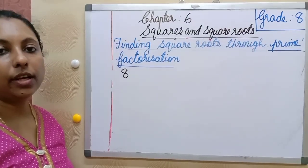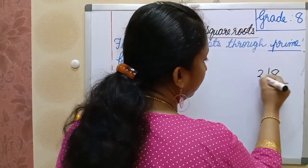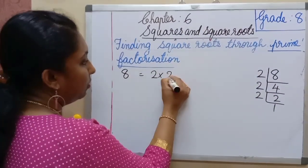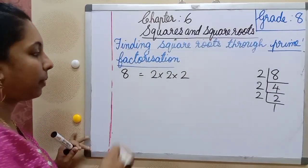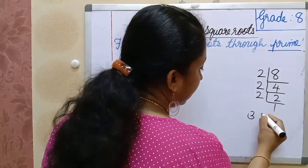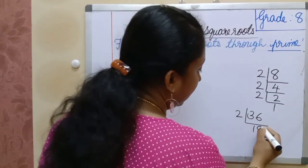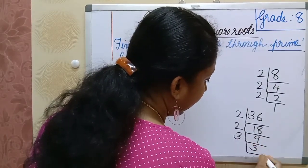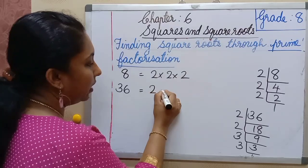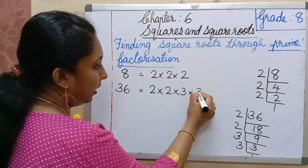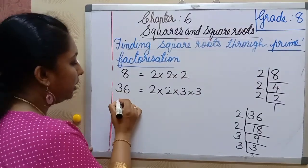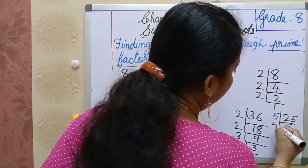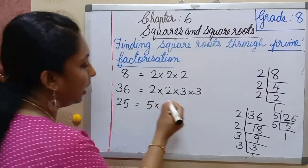Let's find the prime factors of 8, 36, and 25. For 8: divide by 2 to get 4, divide by 2 to get 2, divide by 2 to get 1. So 8 equals 2 × 2 × 2. For 36: divide by 2 to get 18, by 2 to get 9, by 3 to get 3, by 3 to get 1. So 36 equals 2 × 2 × 3 × 3. For 25: 5 × 5 = 25, so 25 equals 5 × 5.